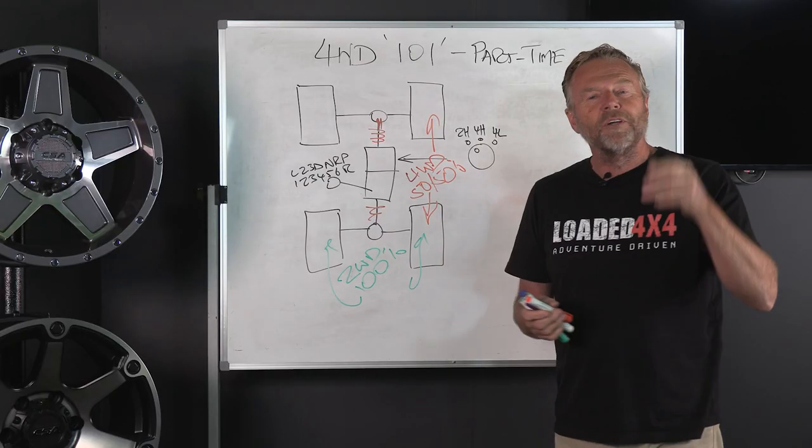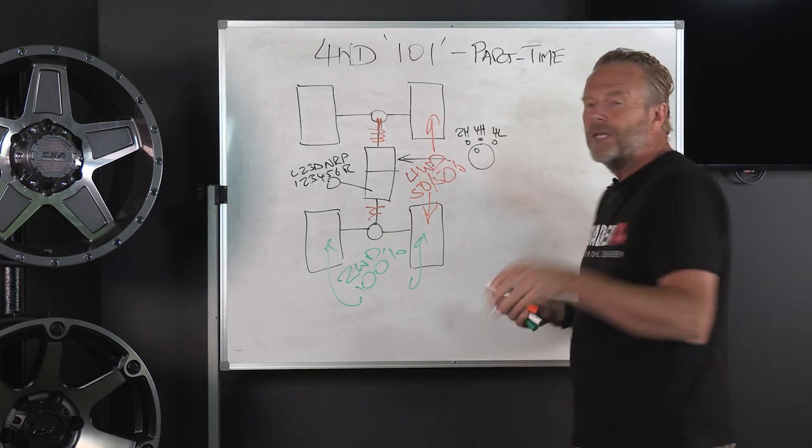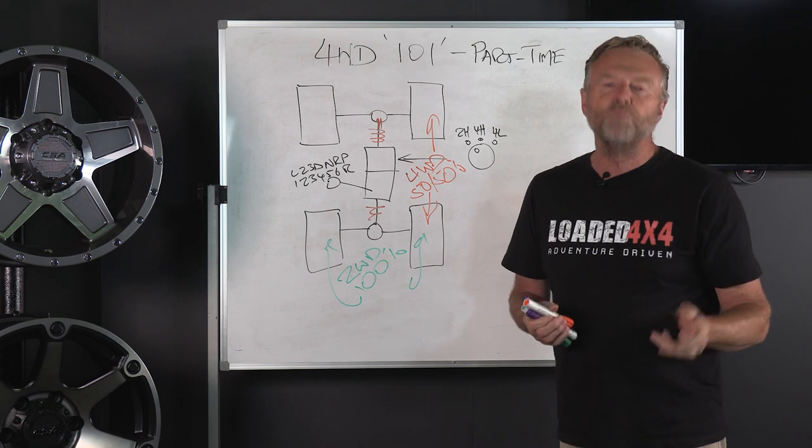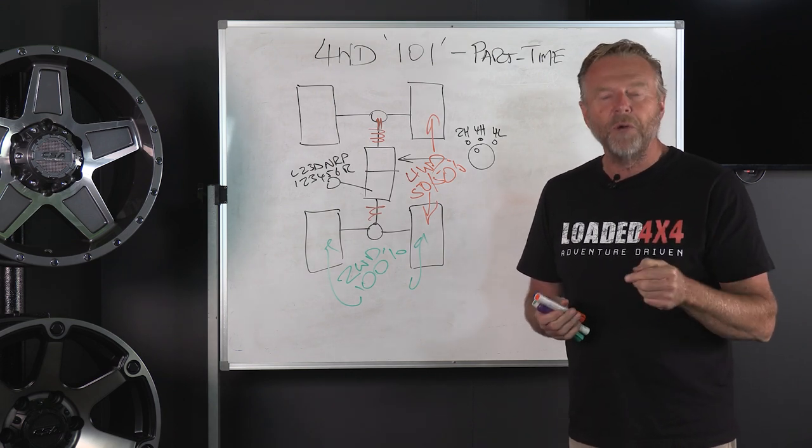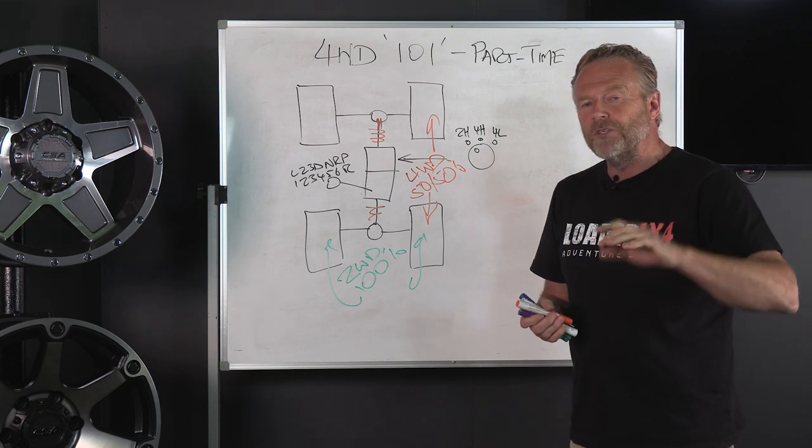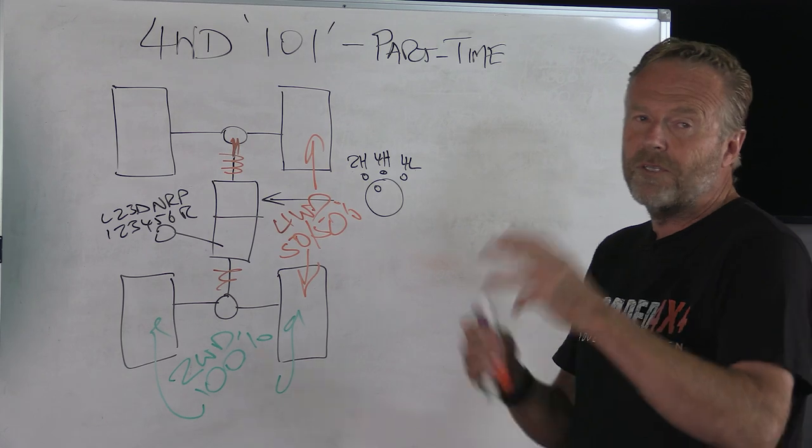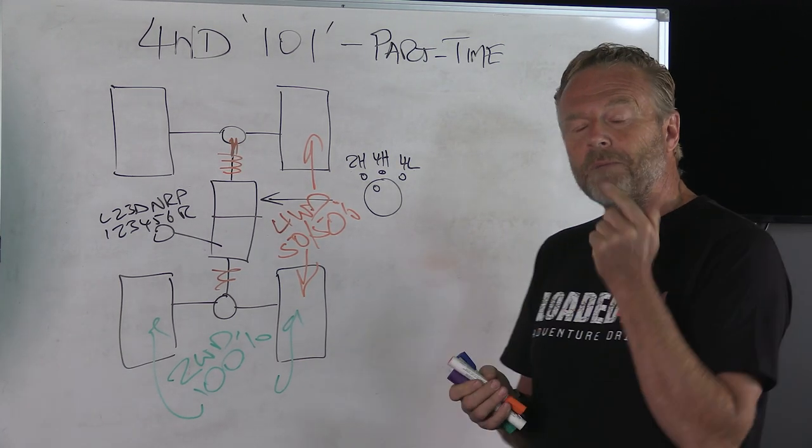Now we're in 4WD with a 50-50 split of torque across both front and back axles. The beauty is we've now got the front wheels pulling as the back wheels are pushing, so when we go around that next bend on a dirt road the car doesn't go sideways. It's incredibly safe in that mode and easy as pie to engage.